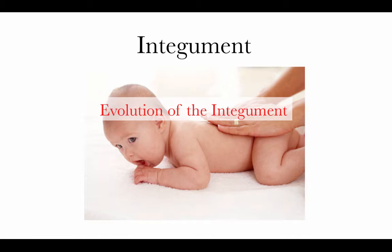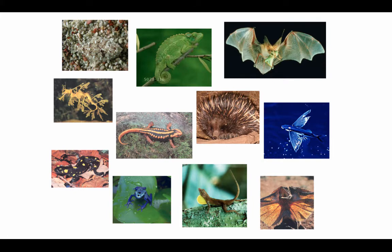If we include all of these other integumentary structures and all the different things that the skin can do, we find lots and lots of different kinds of functions. The colors in the skin can provide camouflage, sometimes in a very dynamic way — as in chameleons that can change their colors to match their background. Colors can also provide warning, as we see in these salamanders and this frog here, where bright colors signal that the animal is poisonous.